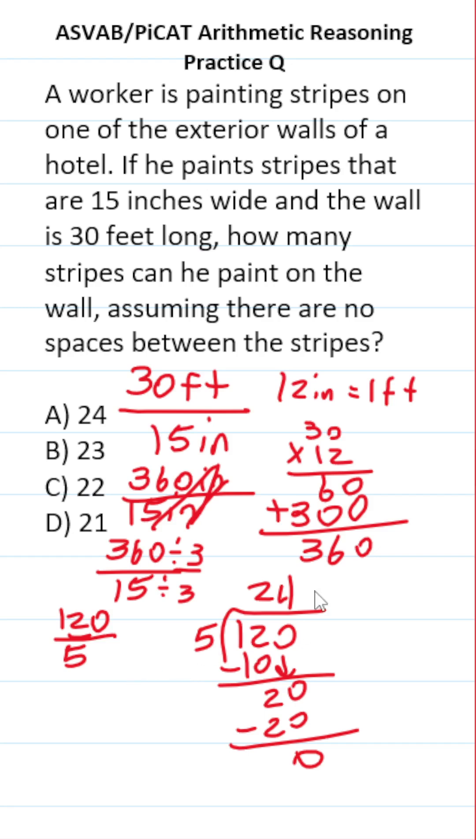In other words, this worker is going to be able to paint A, 24 stripes on this wall if each stripe is 15 inches wide and the wall is 30 feet long.